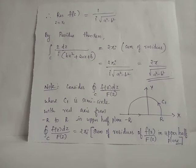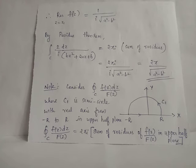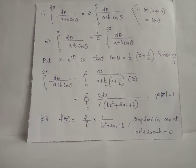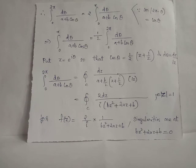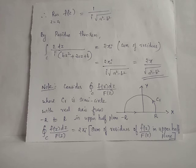By the residue theorem, the contour integral of f(z) dz equals 2πi times the sum of residues, giving 2πi/(i·√(a² − b²)) = 2π/√(a² − b²). Since the given integral equals (1/2) times this value, the final answer is (1/2)·(2π/√(a² − b²)) = π/√(a² − b²).